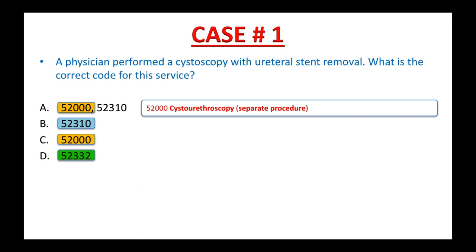This 'separate procedure' designation may represent a different session, different site or organ system, or different approach. So please keep this in mind: the CPT code may not be reported separately with a related procedure. It is bundled into the main procedure on the same body part or organ. You can only assign this code when it is the only procedure performed or is carried out independently or unrelated to the main procedure.